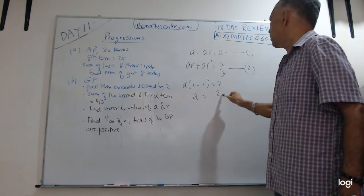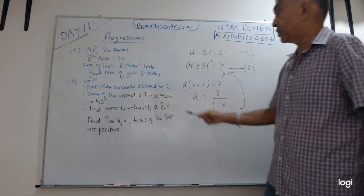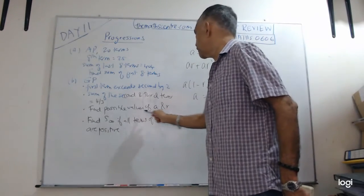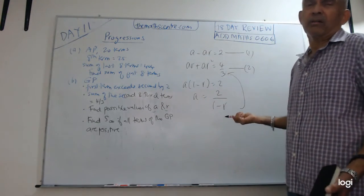All you need to do is just take equation number 1. You'll get a times 1 minus r equals 2. Then you know a is 2 over 1 minus r. You plug it inside here. You can get a and r. Not hard. So you do it yourself. They ask you to find the possible values of a and r. So you'll have two values of a and two values of r. Finish.